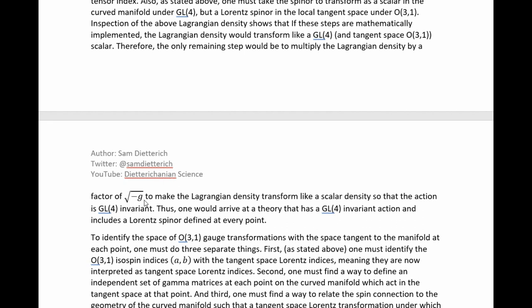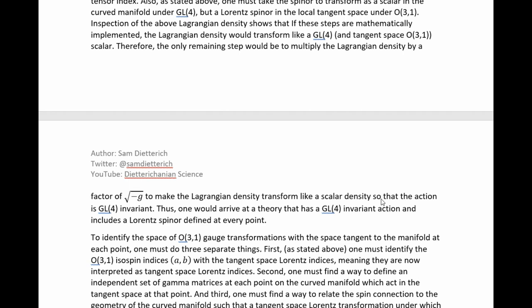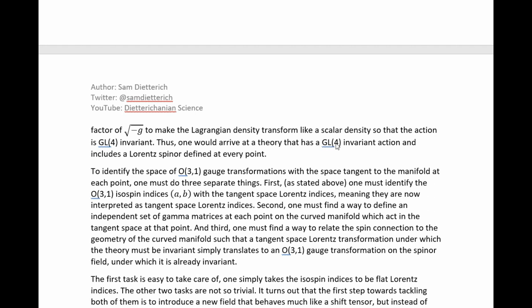Inspection of the Lagrangian density shows that if these steps are mathematically implemented, the Lagrangian density transforms like a GL(4) and tangent space O(3,1) scalar. Therefore, the only remaining step is to multiply the Lagrangian density by a factor of √(−g), where g is the determinant of the metric, to make the Lagrangian density transform like a scalar density so that the action is GL(4) invariant. Thus, one arrives at a theory with a GL(4) invariant action that includes a Lorentz spinor defined at every point.